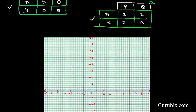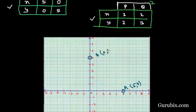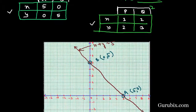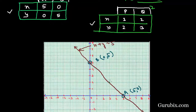We plot the points from equation 1's table: point A is (5, 0) and point B is (0, 5). Then we plot the points from equation 2's table: point P is (3, 2) and point Q is (2, 3). We draw a straight line through points A and B, which represents x plus y equals 5. We then plot P at (3, 2) and Q at (2, 3) on the graph.